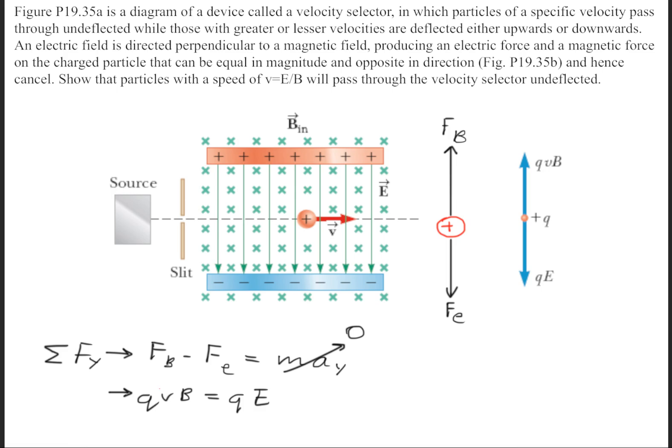So we can cancel the Qs on both sides, leaving us with VB is equal to E, and we can say that V is equal to E over B.